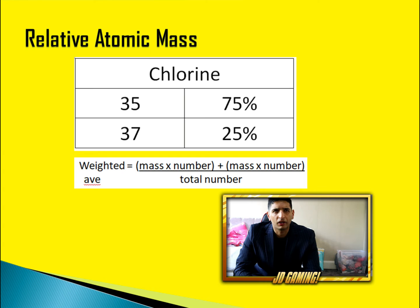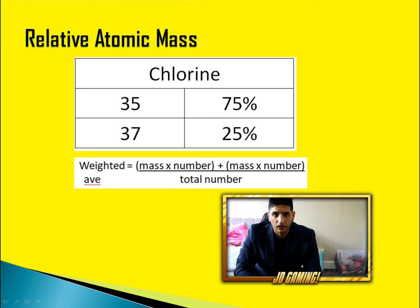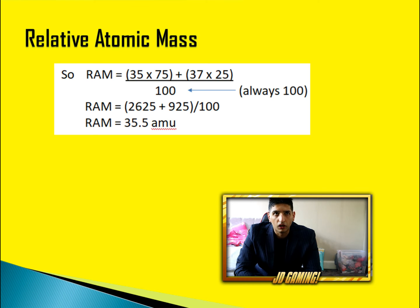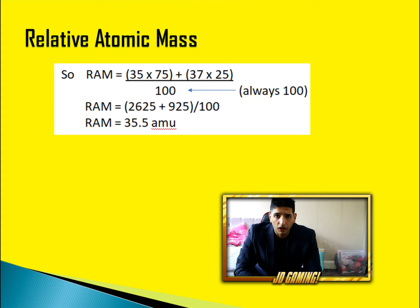Now let's look at relative atomic mass. Can you work this out? Pause the video. Chlorine — work out the relative atomic mass of chlorine. They give you two isotopes: 35 and 37. It's very simple: do 35 times 75, then 37 times 25. Add them up and divide by 100. The answer is 35.5.